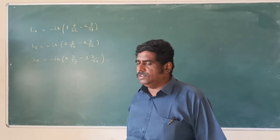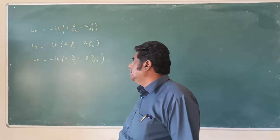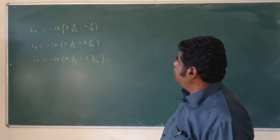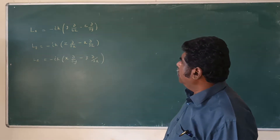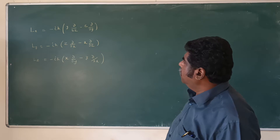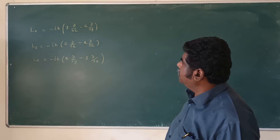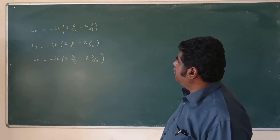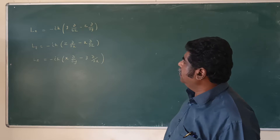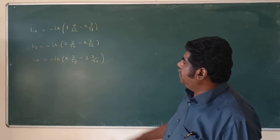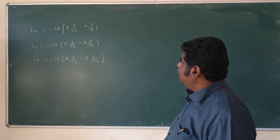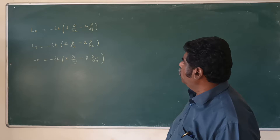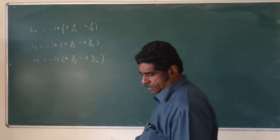The value of Lx is equal to -iℏ times (y ∂/∂z − z ∂/∂y). Then the value of Ly is -iℏ times (z ∂/∂x − x ∂/∂z). Whereas the value of Lz is -iℏ times (x ∂/∂y − y ∂/∂x).